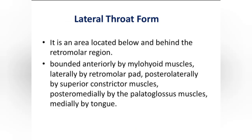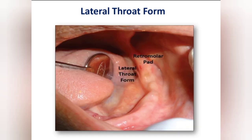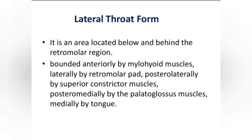This area is located below and behind the retromolar region. Try to visualize the picture — it is located at the distal end of the alveolingual sulcus, below and behind the retromolar pad. The boundary structures are: anteriorly by the mylohyoid muscle, laterally by the retromolar pad, posterolaterally by the superior constrictor muscle, posteromedially by the palatoglossus muscle, and medially by the tongue.